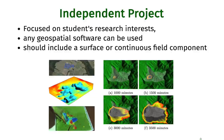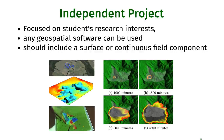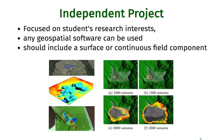An important part of this course is the independent project. You select the project based on your research interest — perhaps your dissertation or thesis topic — and we also provide many topics from previous courses. You can use any geospatial software you want: it doesn't need to be GRASS or ArcGIS; it can be R, MATLAB, or whatever suits your tasks. The only condition is that your project includes some surface processing or a continuous field component, such as an elevation field, precipitation, or as in one three-dimensional example, soil moisture.